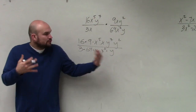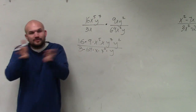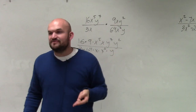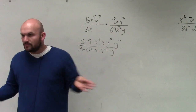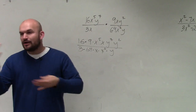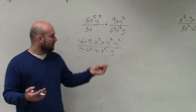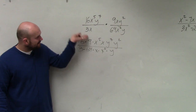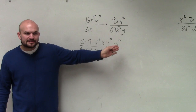Do you guys see how I grouped everything? There's no addition or subtraction, so I can rearrange things. It's the same thing — 3 times 4 times 5 is the same as 5 times 3 times 4. It doesn't matter how you arrange it when it's all multiplication. So I'm just arranging this so I have the numbers, my x's, and then my y's.